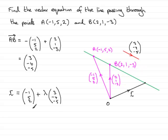So, another version for the line could have been this one. You could have gone R equals O to B. So, that would be 2, 1, minus 3. And then,